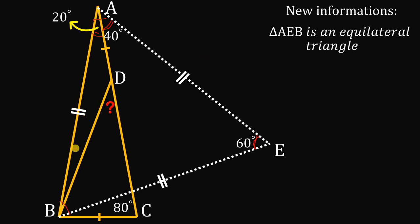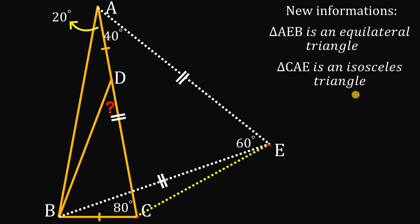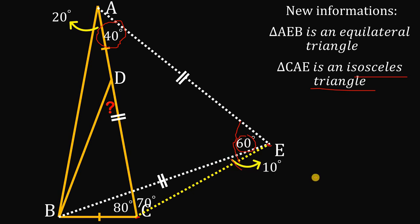We know side AB must be equal to side AC, and also AC must be equal to AE. Therefore, triangle CAE must be an isosceles triangle because two sides are equal. The vertex angle is 40 degrees, so the base angles must each equal 70 degrees, since 70 + 70 + 40 = 180. We know angle AEC is 70 degrees and the equilateral triangle contributes 60 degrees, so this small angle right over here must equal 10 degrees.